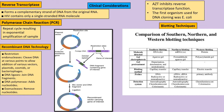Blotting techniques are used to identify specific DNA, RNA, or protein fragments within a given tissue sample. Southern blotting identifies DNA, Northern blotting identifies RNA, and Western blotting identifies protein.